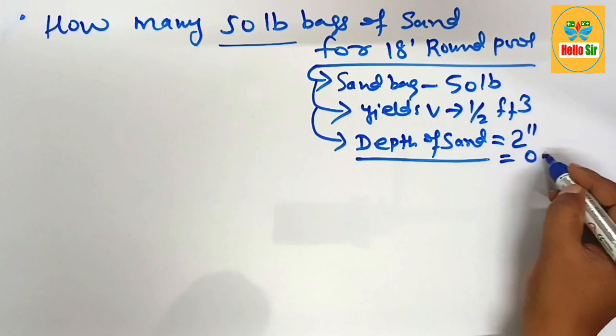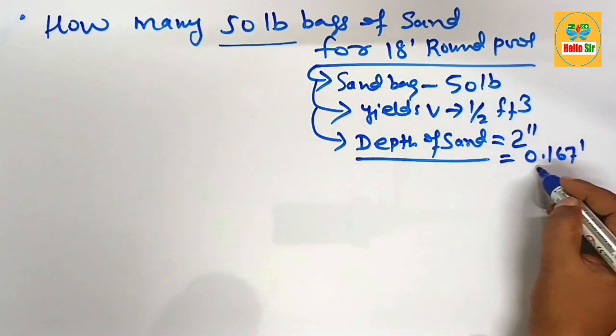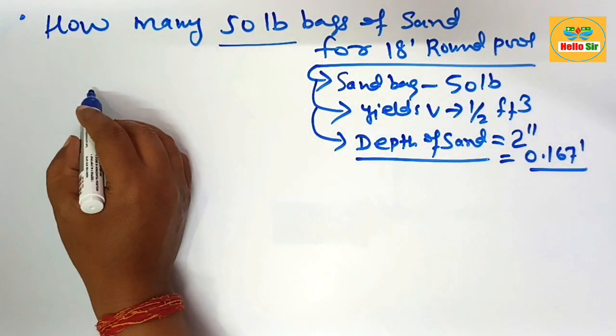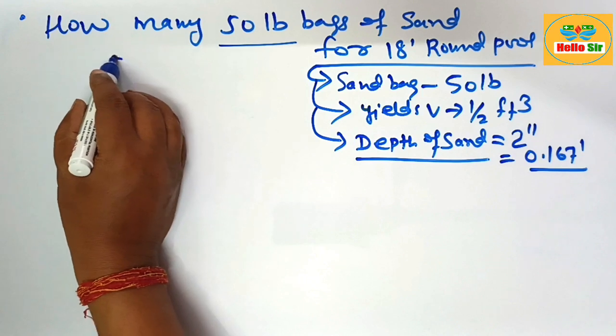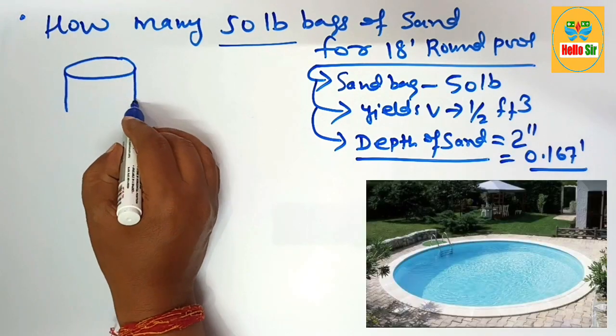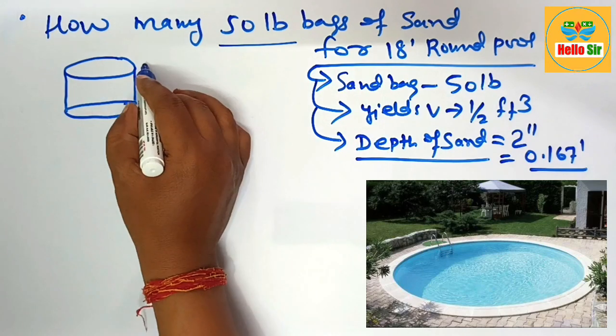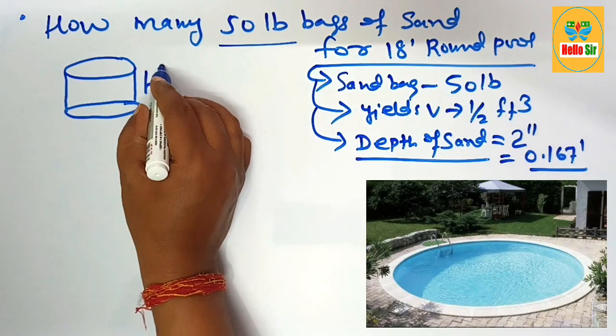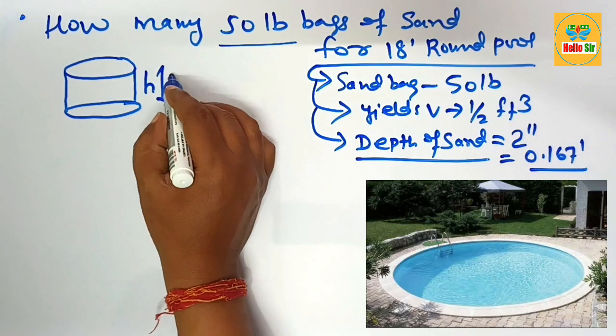First, we'll make a rough diagram to understand the dimensions of the swimming pool. Suppose this is a rough diagram for the swimming pool. This is the height of the pool, which is about 4 feet.